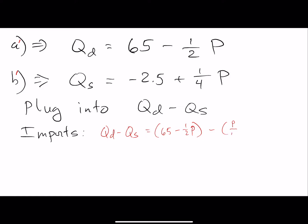I've just rewritten that a little bit, and if you do the calculations what you're going to get is that the imports will be equal to 67.5 minus 3/4P.